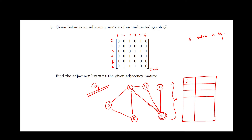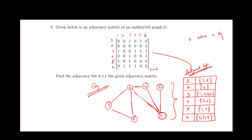Vertex 1 is adjacent to 3 and 5. Vertex 2 is adjacent to only 6. Vertex 3 is adjacent to 1, 4, 5, and 6. Vertex 4 is adjacent to 3 and 6. Vertex 5 is adjacent to 1 and 3. Vertex 6 is adjacent to 2, 3, and 4. This is the adjacency list with respect to the given adjacency matrix of the undirected graph G.